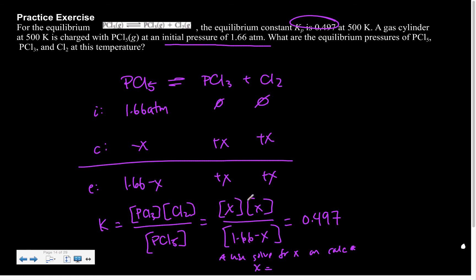So then once I got x, I would solve for these. So x would be my concentrations for those, and 1.66 minus x would be my concentration for that. Does that make sense? I don't mean x can be bigger than this. I mean x couldn't be bigger than 1.66. That's what I mean.